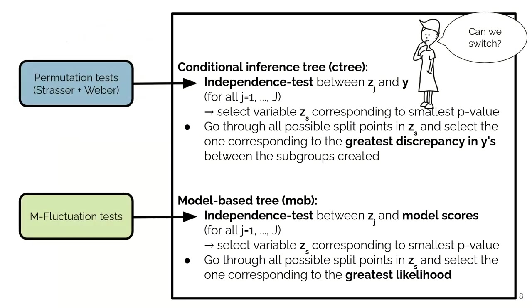Now the thing is that we're using independence tests for both the ctree and the model-based tree. But funnily enough we're using different kinds of tests for those, and that has historical reasons because we started developing or my collaborator started developing those two methods independently.